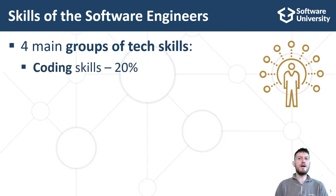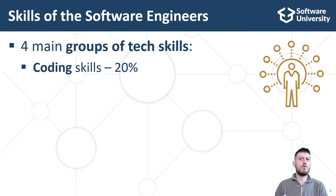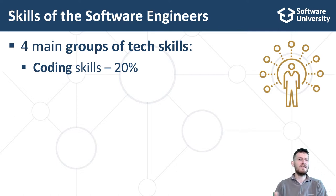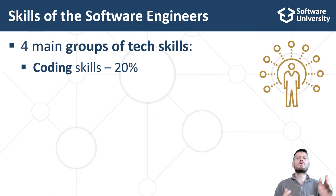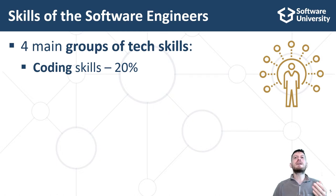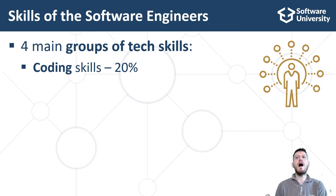Coding skills form 20% of developer skills. These include writing code, using developer environments (IDEs and developer tools), working with variables and data, calculations, conditional statements and loops, using functions, methods, classes, objects, working with data structures such as arrays, lists, maps, strings and trees, using programming APIs and libraries, and troubleshooting and debugging the code.